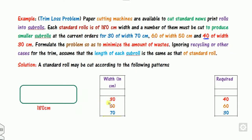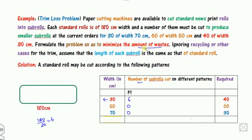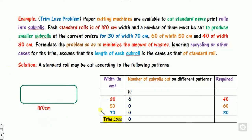Now the question is: what are the cutting patterns? For example, you can divide 180 cm into six pieces of 30 cm each — that is one possible pattern (P1). Your target is to find the number of sub-roll cutting plans. For P1 with six 30 cm pieces, 180 cm is fully utilized, so there is no waste.